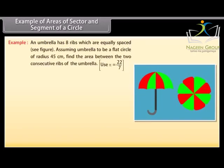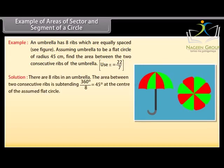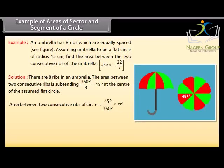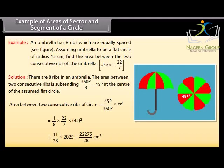Example: An umbrella has 8 ribs which are equally spaced. Assuming the umbrella to be a flat circle of radius 45 cm, find the area between two consecutive ribs. Use pi = 22/7. There are 8 ribs, so the angle between two consecutive ribs is 360°/8 = 45° at the center. Area between two consecutive ribs equals (45°/360°) × pi R squared, which gives 22,275/28 centimeters squared.